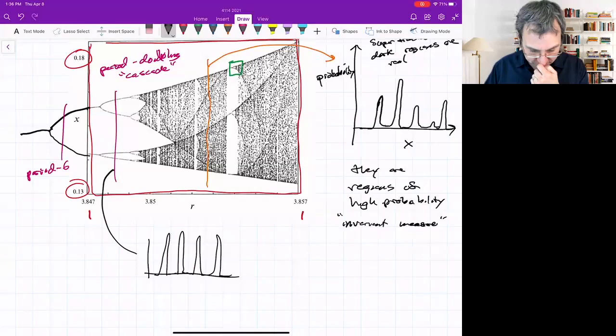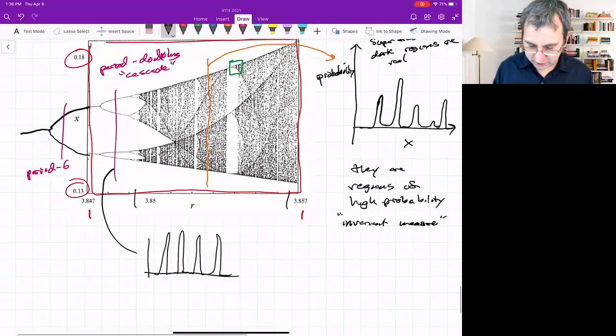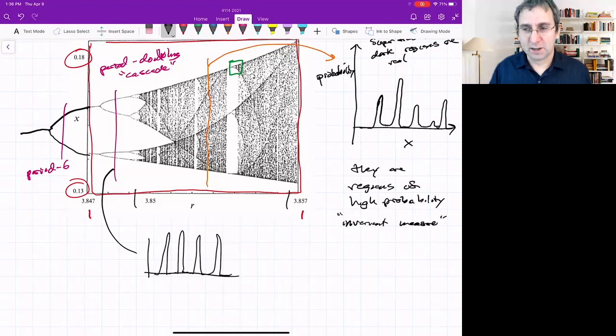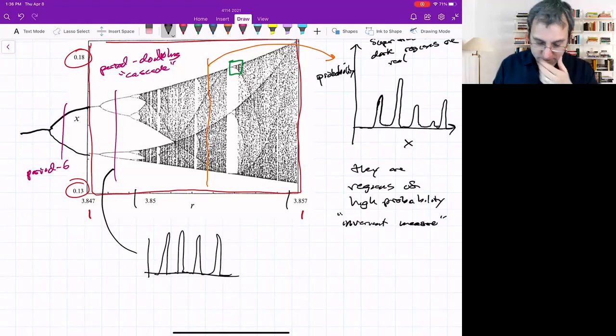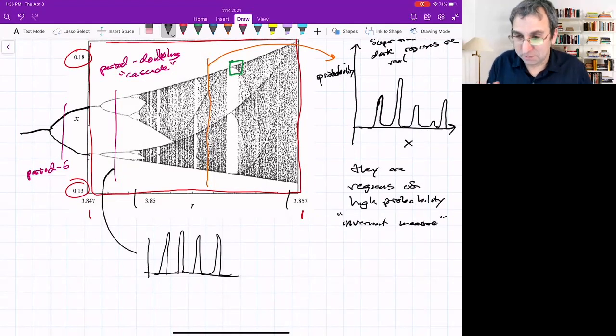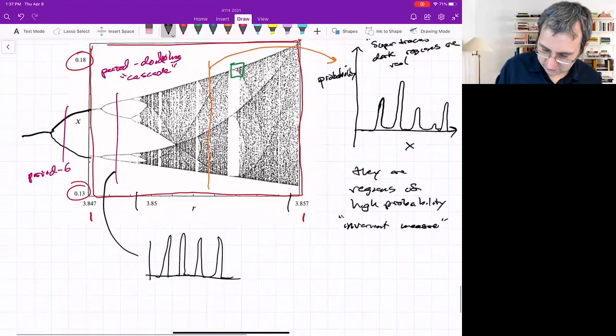People have also looked at this question of, suppose you pick a random value of R, even in this region, suppose you pick a random value of R, what's the probability you're in a chaotic region or a periodic window? And I don't know the answer, but people have worked on this. And if you keep zooming in, there are periodic windows everywhere. There's a non-zero probability of getting each. So it's not like these things that we're showing as chaotic are really just periodic at a really high period. They are chaotic.